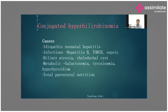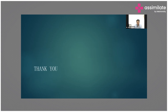Causes of neonatal hepatitis include: it is a diagnosis of exclusion and with appropriate treatment the child can recover. Causes include TORCH infections, sepsis, hepatitis B, biliary atresia, and polycythemia. Metabolic disorders such as galactosemia and tyrosinemia, as well as total parenteral nutrition, can cause conjugated hyperbilirubinemia. These are all important causes to differentiate.